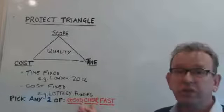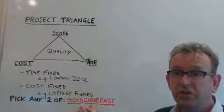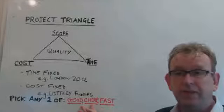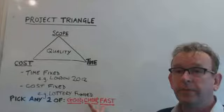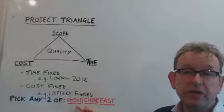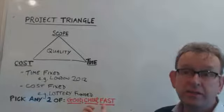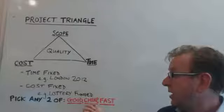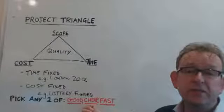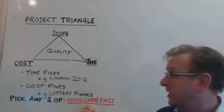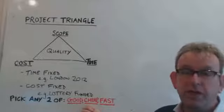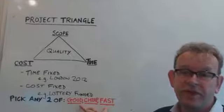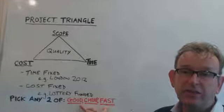You can deliver a product or deliverable which is good quality, and it's possible to do that cheaply — however, it's not also possible to do it quickly. It's possible that you could deliver a high-quality product fast, but not cheaply at the same time. The third combination is that it's possible to deliver something quickly and cheaply, but it's probably not going to be very good. So that's an alternative way of looking at the project triangle — picking any two of these three factors and setting your objectives accordingly.